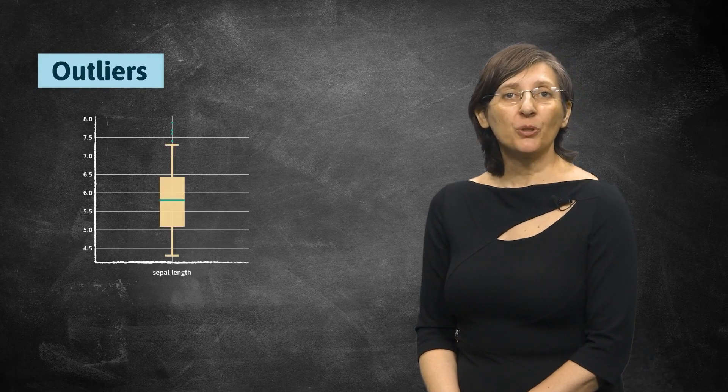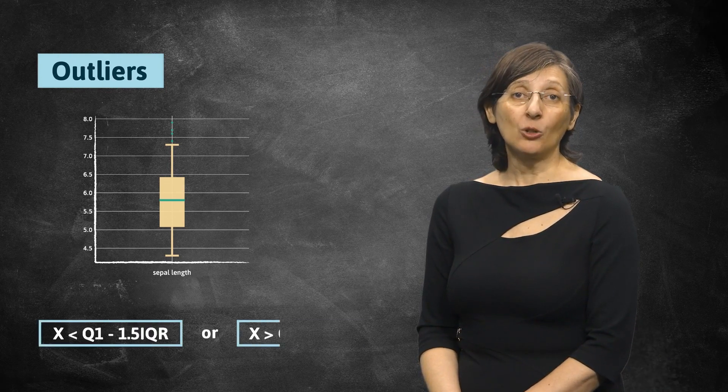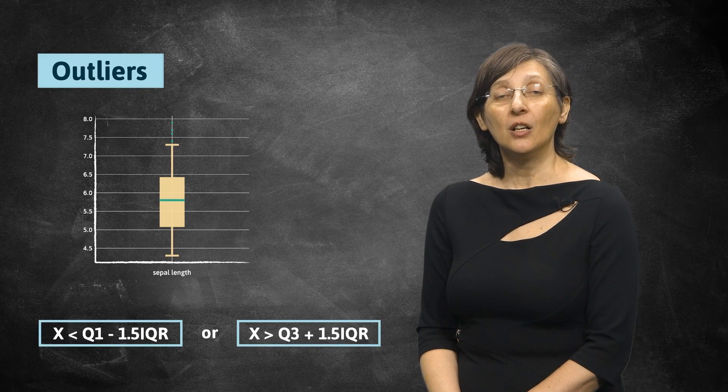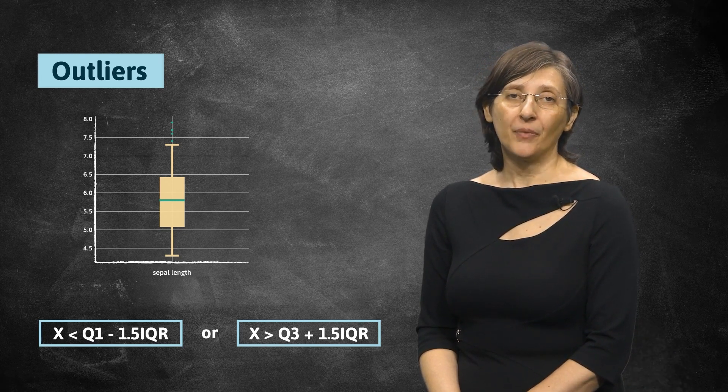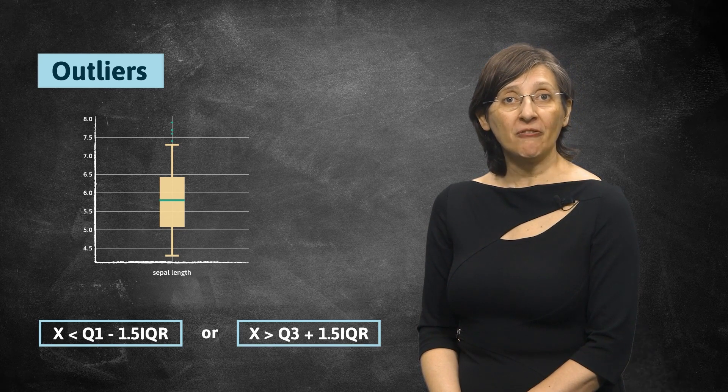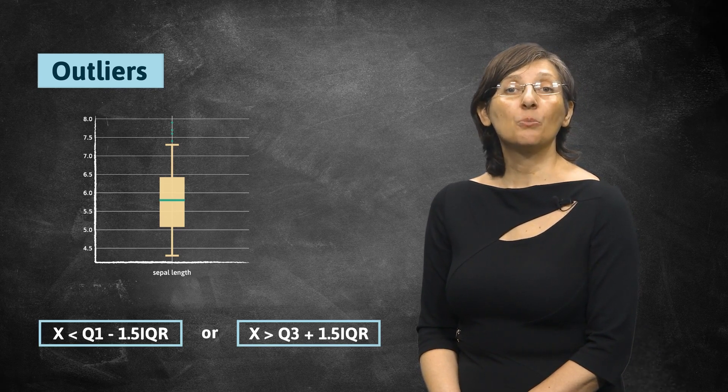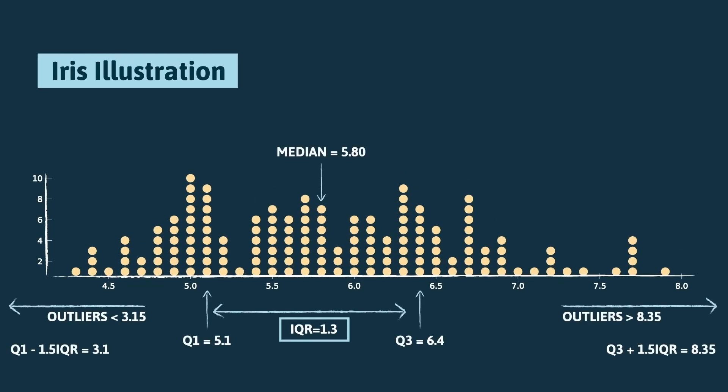Therefore, we are now ready for presenting a second definition for outliers, now based on the IQR. An outlier is any value lower than the first quartile minus 1.5 IQR, or higher than the third quartile plus 1.5 IQR. Since standard deviation depends on the mean value, it is also perturbed by the existence of outliers and so less robust than IQR. In our examples, outliers would be below 3.15 and above 8.35, so there is no outlier for the sepal length variable in the iris dataset.